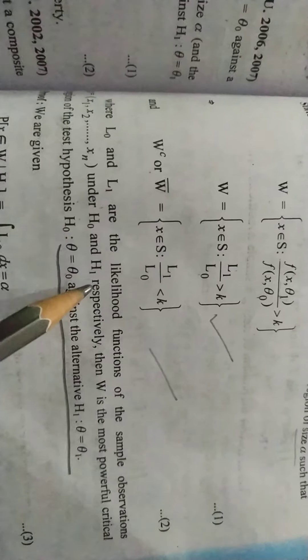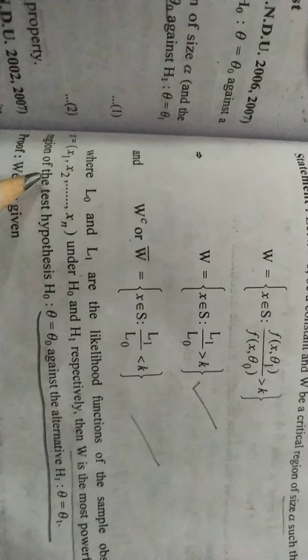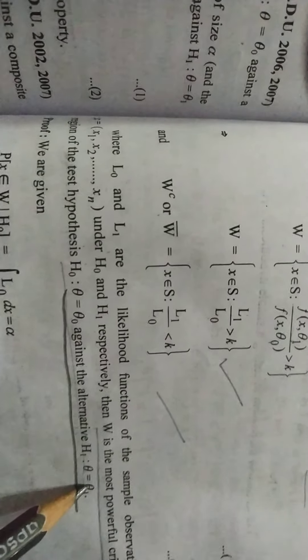So what will the complement be? Less than k. Where L0 and L1 are likelihood functions of the sample observation under H0 and H1. So here we have to show that W is the most powerful critical region against this hypothesis.